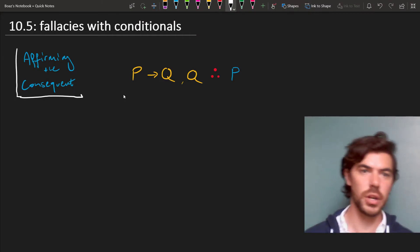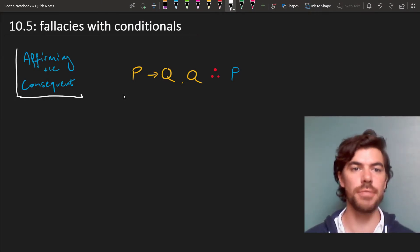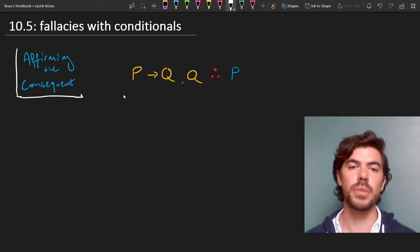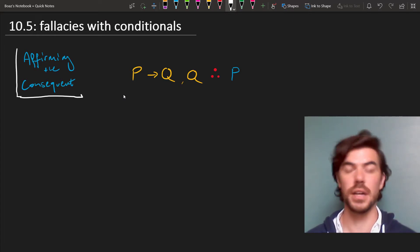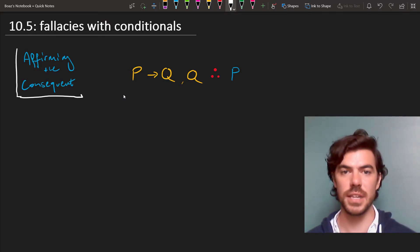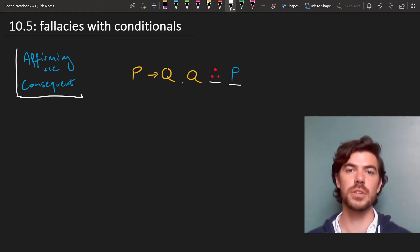So there are two fallacies we're going to look at, and the first of these is called affirming the consequent. This happens when we take a conditional plus an affirmation of the consequent, in this case Q, and we falsely derive—I'm using this red therefore symbol to indicate a fallacious inference—so we falsely infer that the antecedent is true just on the basis that the consequent is true.